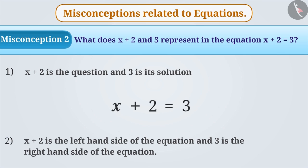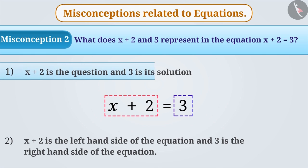Many times, it becomes obvious that the question of mathematics is written on the left-hand side of the equal to sign and the answer on the right. Due to this misunderstanding, x plus 2 is believed to be the question and 3 is its answer.